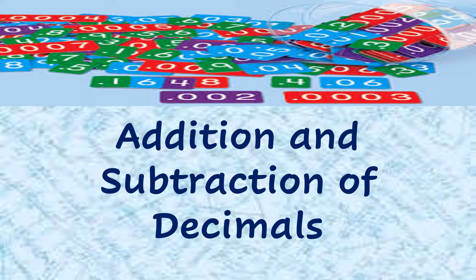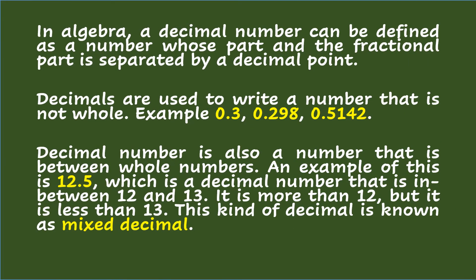Addition and Subtraction of Decimals. In algebra, a decimal number can be defined as a number whose whole part and the fractional part is separated by a decimal point. Decimals are used to write a number that is not whole. Examples: three-tenths, two hundred ninety-eight thousandths, five thousand one hundred forty-two ten-thousandths.